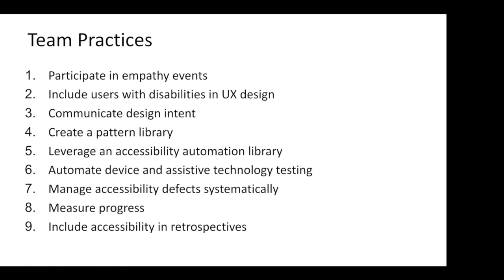When you have an idea and you're mapping it out with wireframes or comps, make sure you're communicating the intent — designs shouldn't just be a presentation layer of what you see, they're actually what you experience. So communicate this so developers know the intended behavior and can implement it as such. Having a pattern library with accessible components makes your life really easy, and on top of that, leveraging an accessibility automation library can speed up your development process and help you catch accessibility issues early.